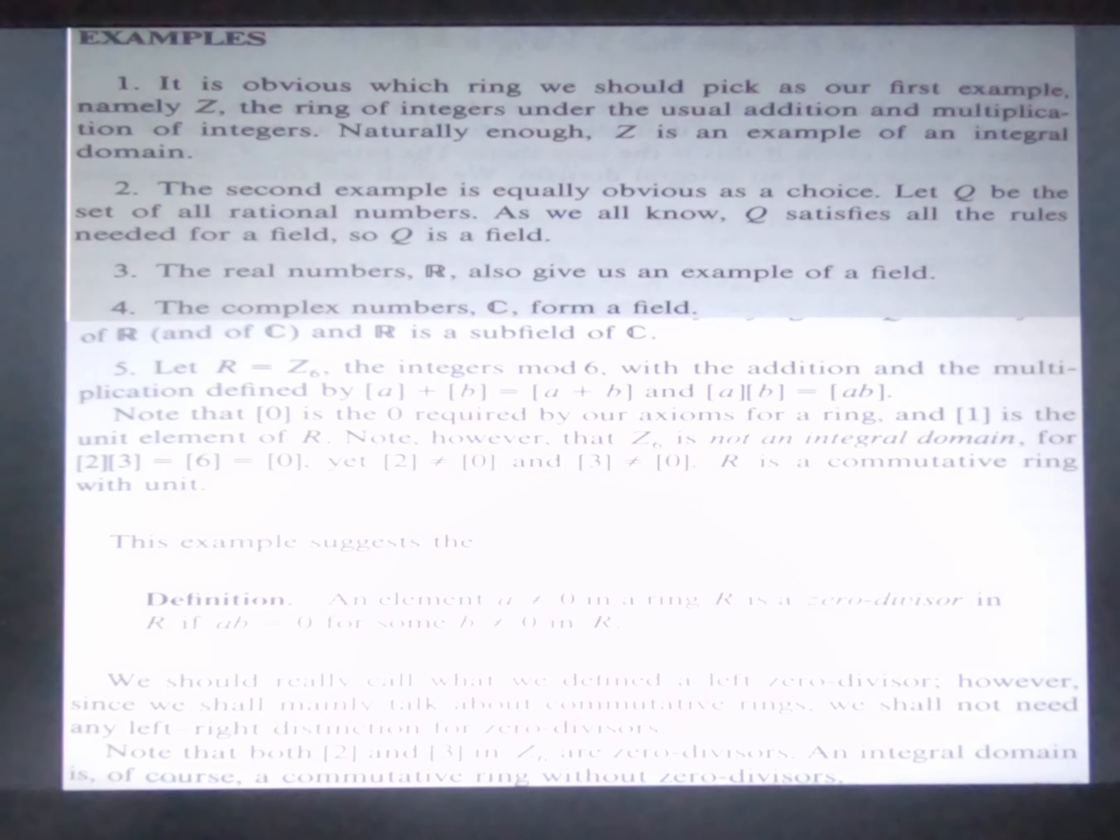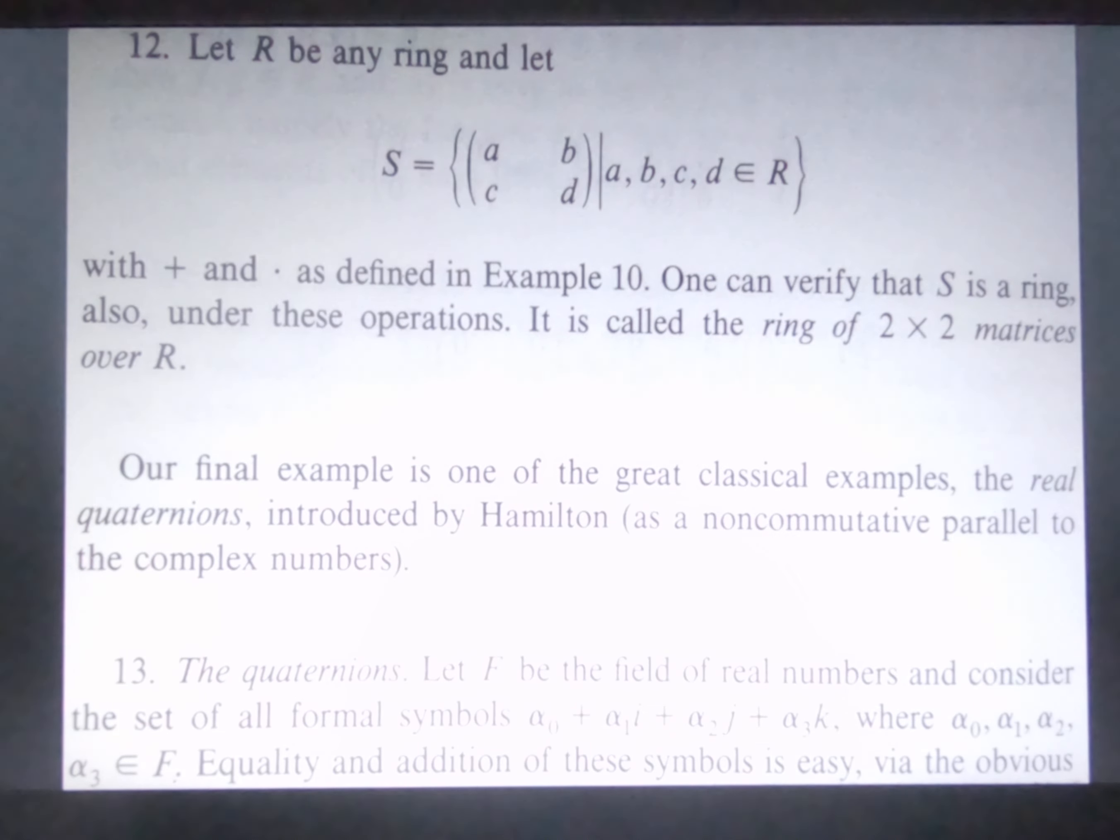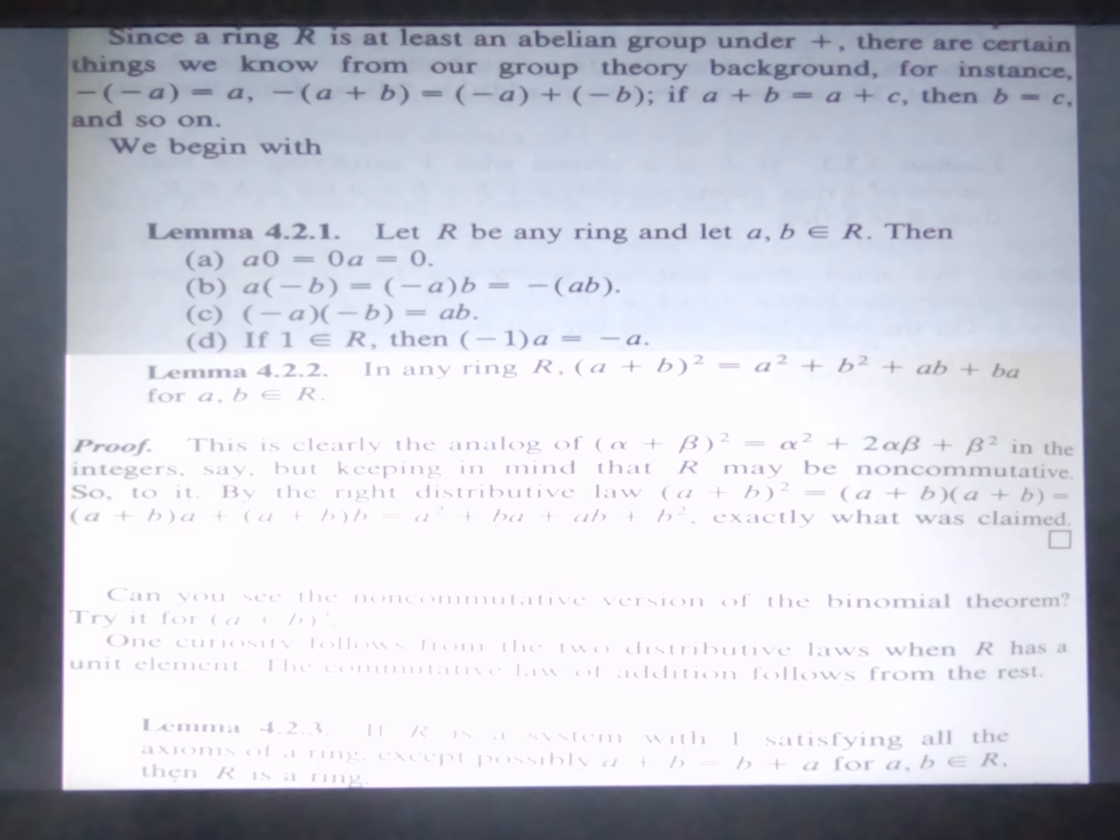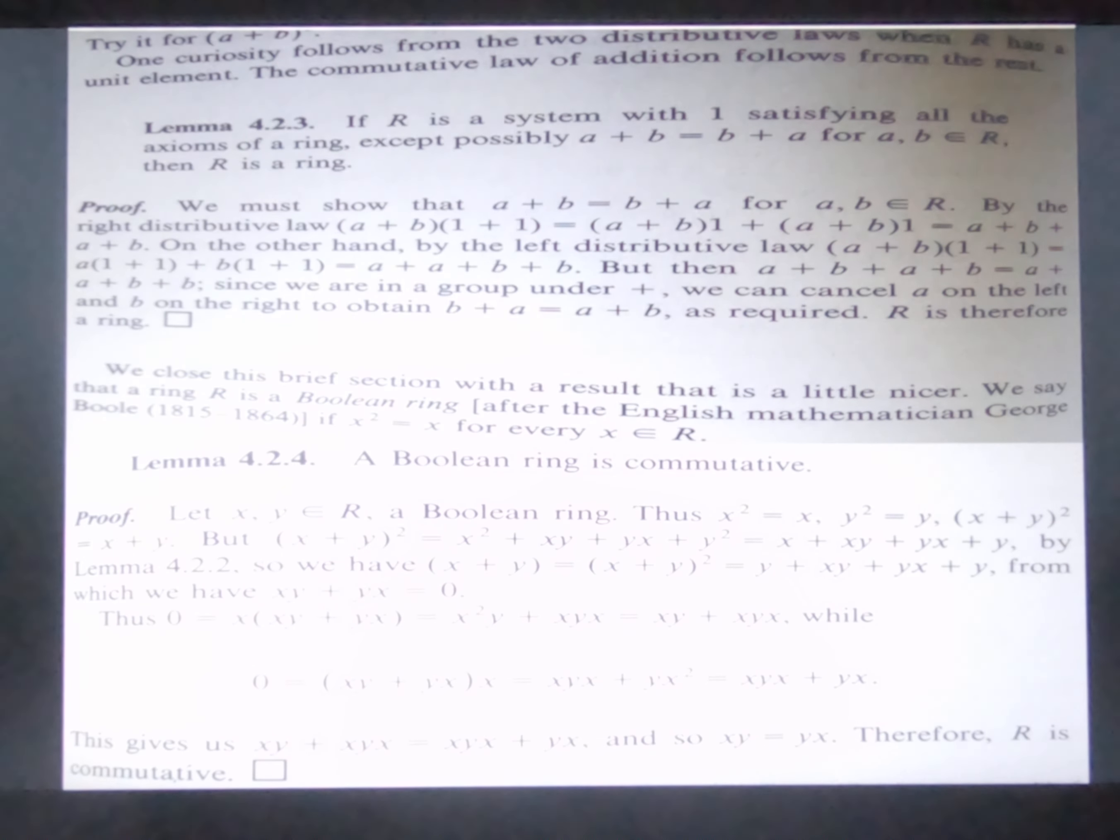These are some examples. These are more examples. And something is called quaternion. These are quaternion. So more definition about the quaternion. More property. And Boolean ring.